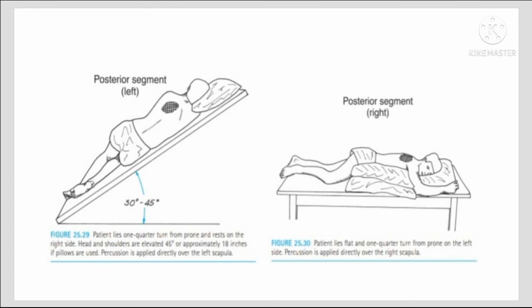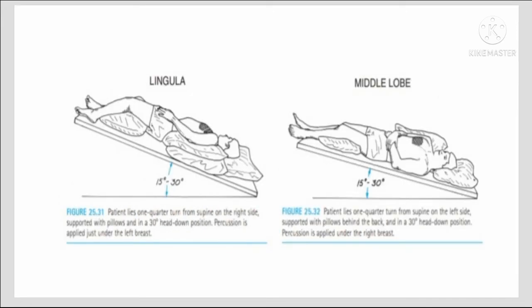Upper lobe posterior segment — right side: patient lies one quarter turn from prone, resting on the left side; pillow is used under the head and on the side; percussion is applied directly over the right scapula. Lingula — left side: patient lies one quarter turn from supine on the right side, supported with pillows under the head, on the side, and under the knee; patient is kept in 30 degree head-down position; percussion is applied just under the left breast.